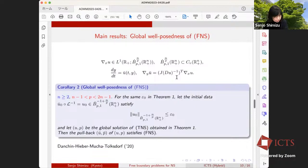These classes are given by maximal L1 regularity theorem. So the second derivative of u belongs to L1 B^{-1+n/p}_{p,1}. So the first derivative of u belongs to this class. Where B^{n/p}_{p,1} is embedded into CV. It is a continuous function with vanishing function at infinity. This shows u is Lipschitz continuous function for almost all time. Therefore, the ordinary differential equation solves uniquely global in time. As a corollary of the main theorem, we obtain global well-posedness of originally free boundary problem of Navier-Stokes equations. N and p are the same as theorem 1. For the same initial data u_0 in theorem 1, the initial data, u_0, sufficiently small, and let u p be the global solution of transport problem obtained in theorem 1. Then the pullback u bar p bar of up satisfies the original problem FNS.